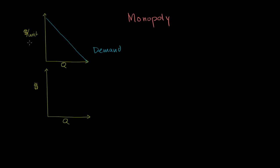We're assuming we're the only producer here — we have a monopoly in this market. So if we pick a quantity: if we don't produce anything, we generate no revenue, so total revenue is 0. And if we produce a lot but charge nothing, total revenue is also 0. As we increase quantity from that point, total revenue keeps going up, reaches some maximum point, and then starts going down again. So total revenue looks something like that.